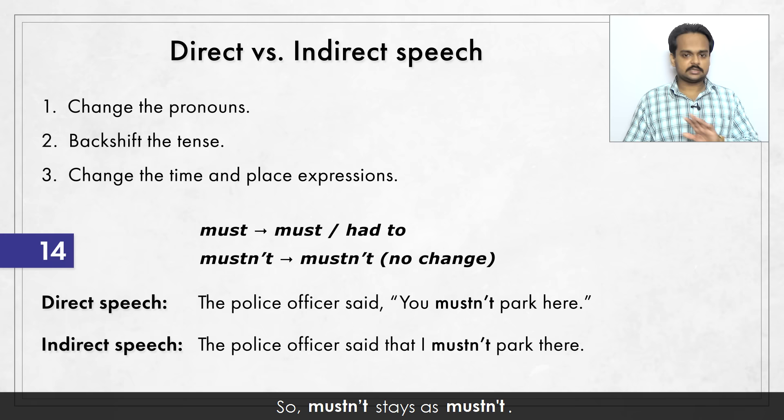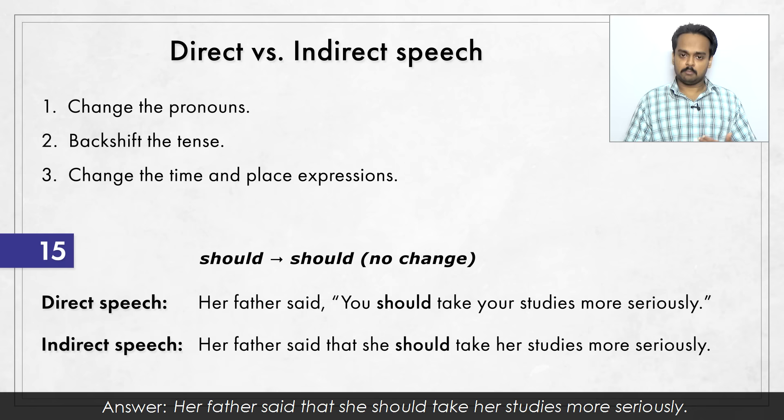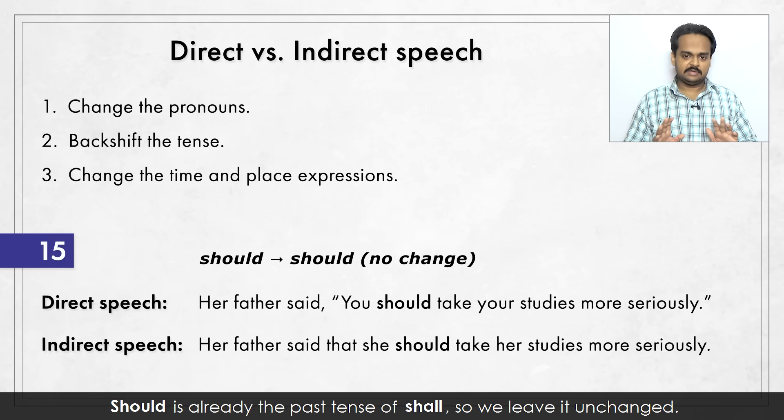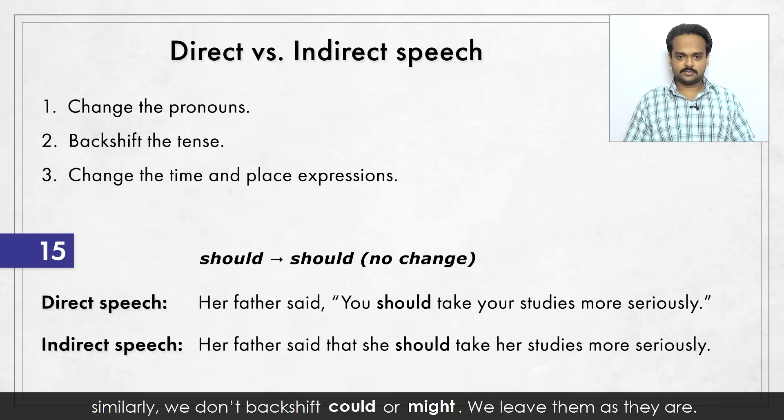Here's the last sentence in this exercise. Her father said, "You should take your studies more seriously." Her father said that she should take her studies more seriously. "Should" is already the past tense of "shall", so we leave it unchanged. This is true of all the past tense modals. We saw "would" before. Similarly, we don't backshift "could" or "might" – we leave them as they are.